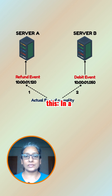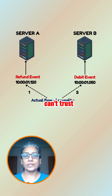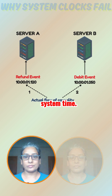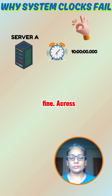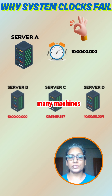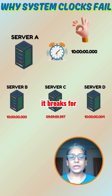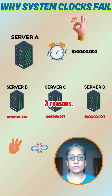It's this: in a distributed system, you can't trust system time. On one machine, system time is fine. Across many machines, it breaks for three reasons.